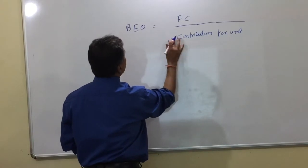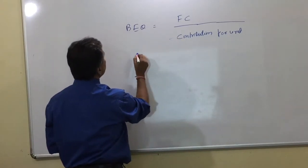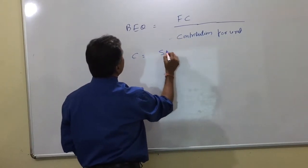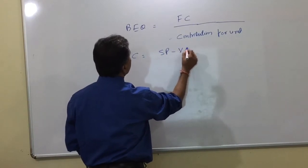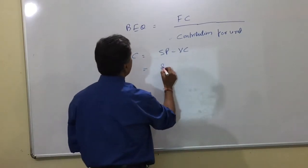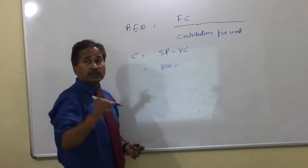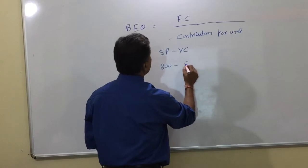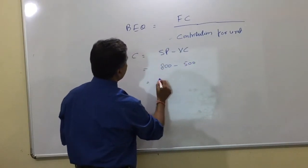And how do I get C? C equals selling price per unit minus variable cost per unit. So my selling price per unit is how much? 800. My variable cost is how much? 500. So my C is how much? 300.